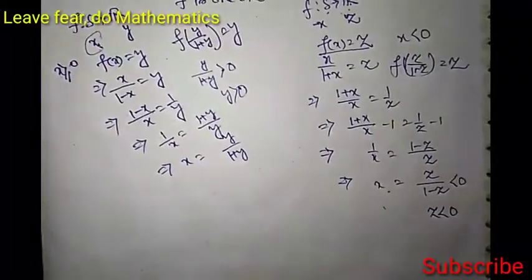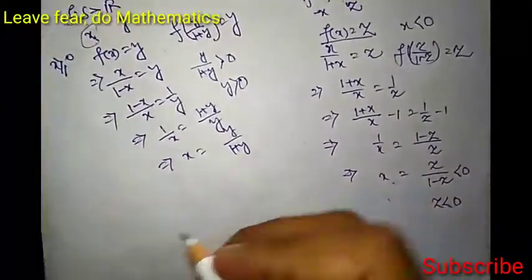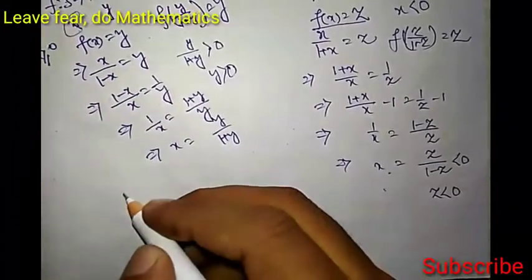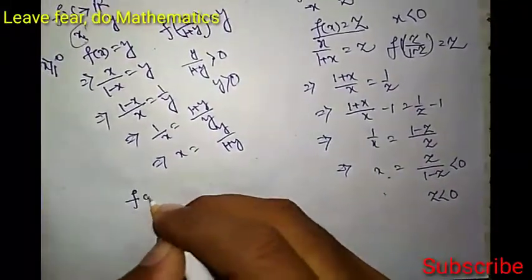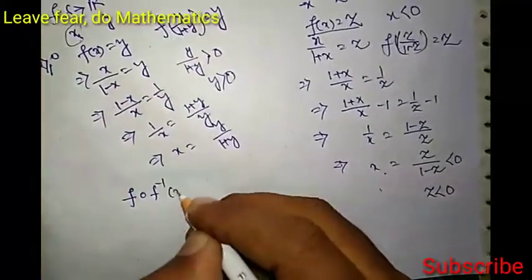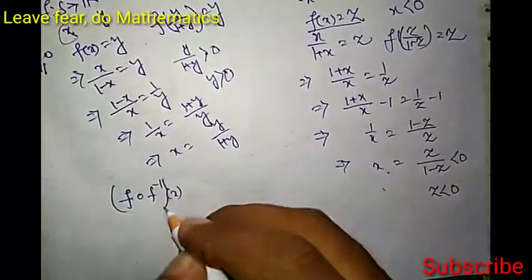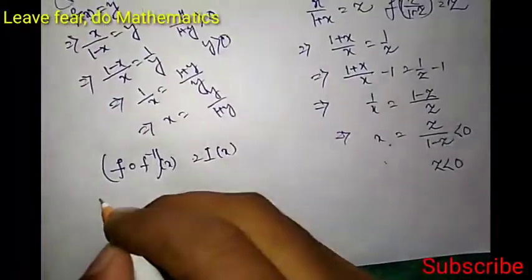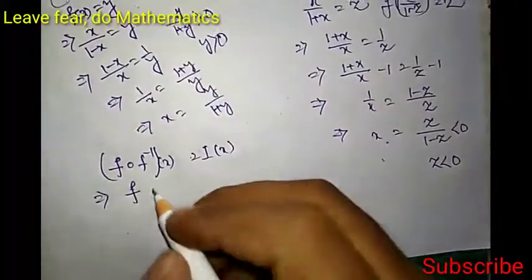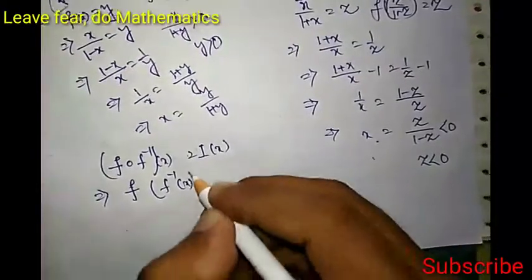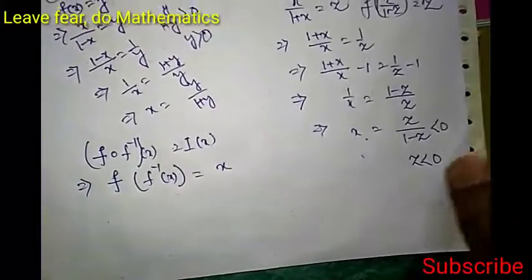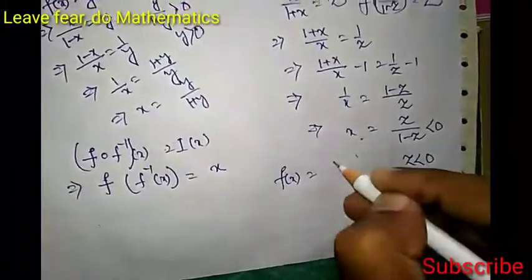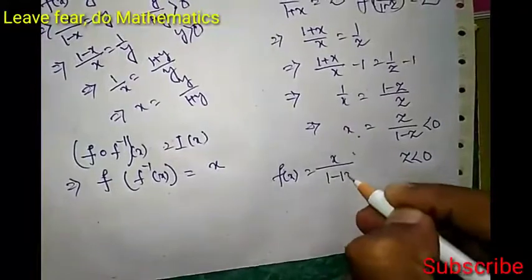So f is bijective as it is both one-one and onto. Since f is bijective, f inverse exists. To find f inverse, we use the identity f(f⁻¹(x)) = x. We know f(x) = x over (1 minus mod x).